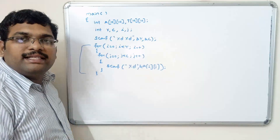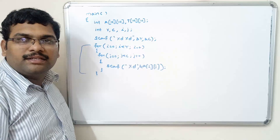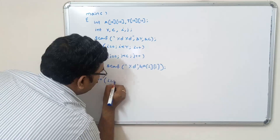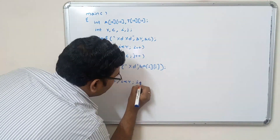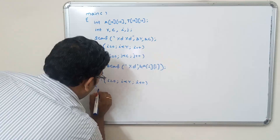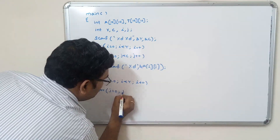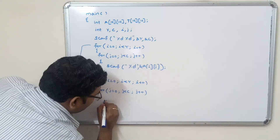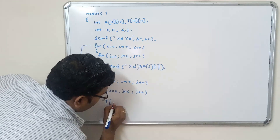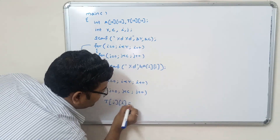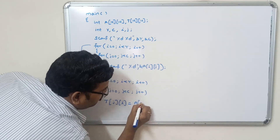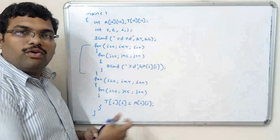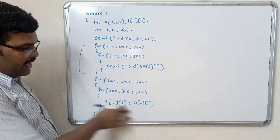Now we assign values to the transpose matrix by simply replacing i and j. We write another nested for loop: for i = 0, i less than rows, i++ — for j = 0, j less than columns, j++ — and then transpose[j][i] = A[i][j]. This copies the rows into columns and columns into rows.